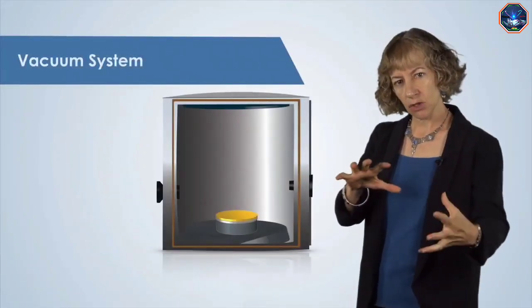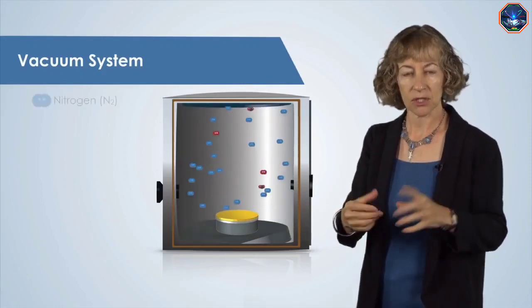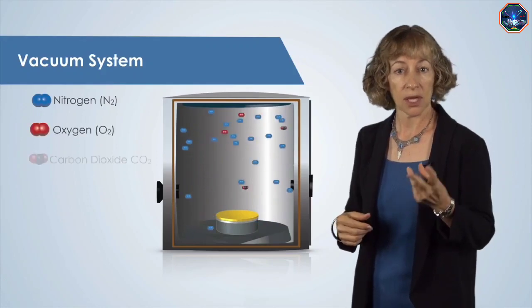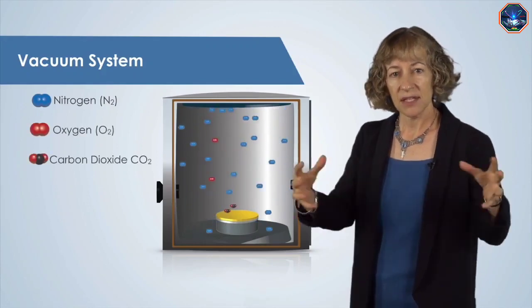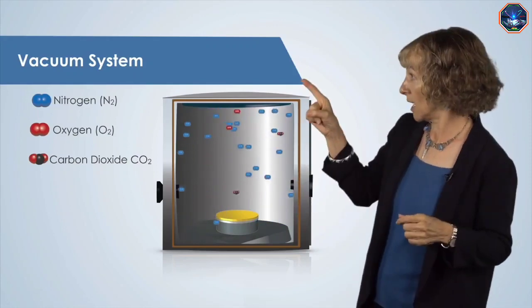Let's think about a sealed chamber for a minute. The air inside is made up of different types of molecules such as nitrogen, oxygen and carbon dioxide. These air molecules are moving and bouncing around inside the chamber as we see here.